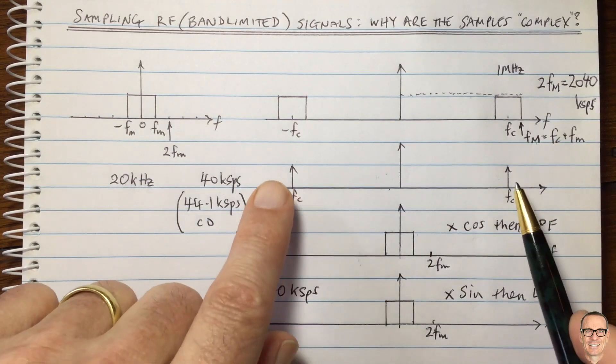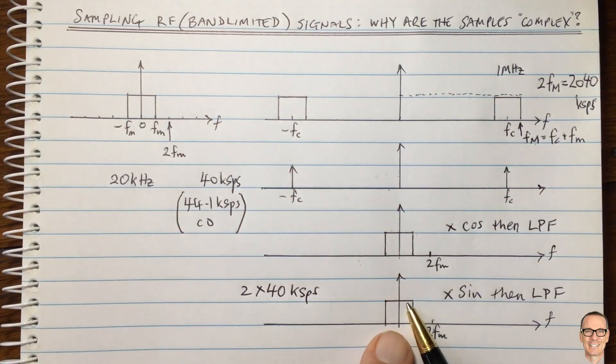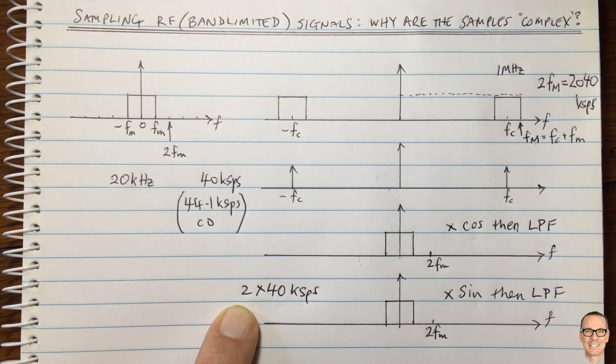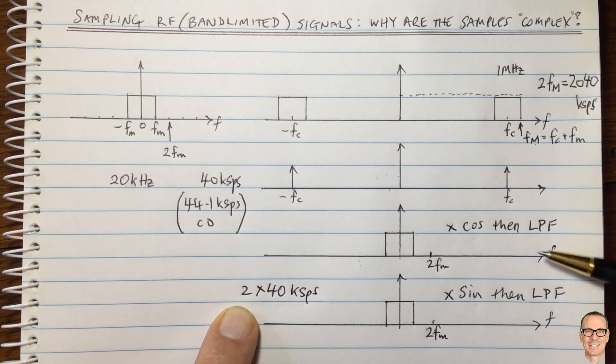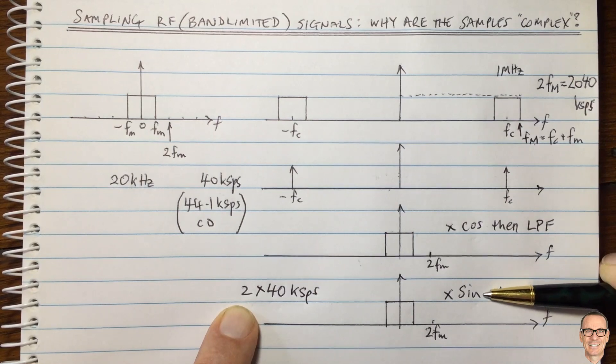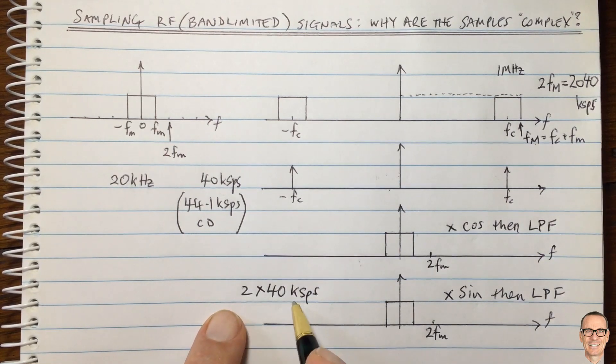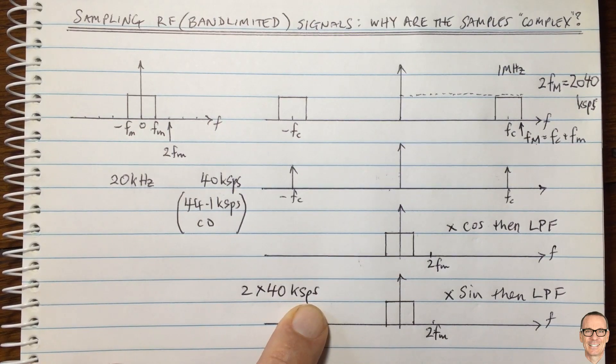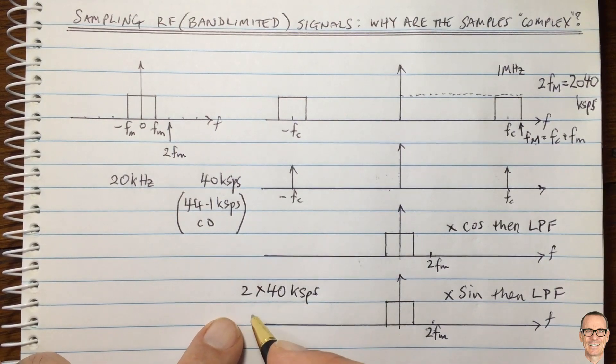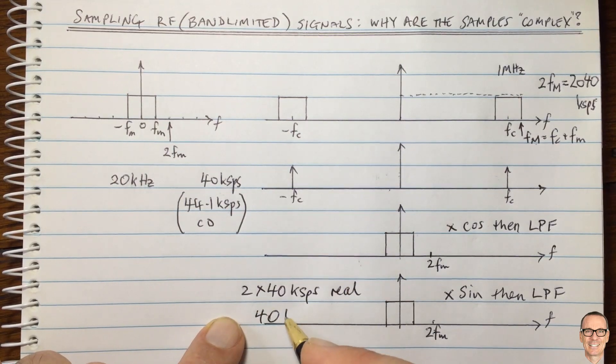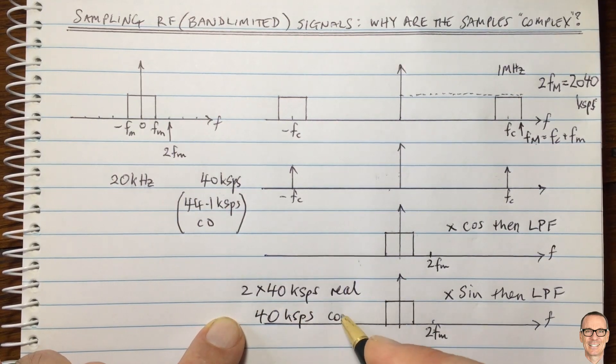So here we've got, if we did it for our example, 2 times 40 kilo samples per second, which are a lot less than 2 million samples per second. So there's definitely an advantage to doing this down conversion. We can realize that one is a cos and one is a sine and they are orthogonal, and we have a convenient mathematical notation of complex numbers to represent a sinusoid with the cos and the sine. And so therefore we have 2 times 40 kilo samples per second of real samples.